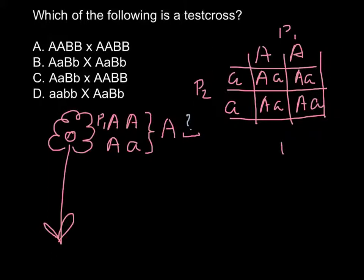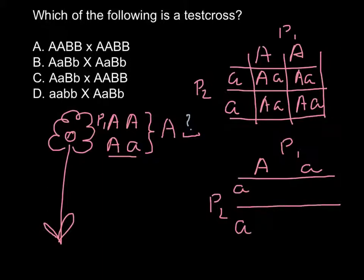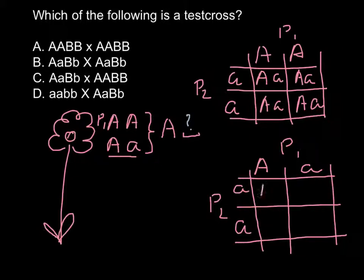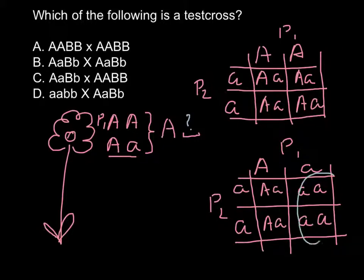If we use a heterozygous plant as parent one and cross it with a homozygous recessive, the outcomes would be different. This time we would have capital A small a, capital A small a, small a small a, and small a small a. So we get 50% small plants and 50% tall plants — a one-to-one ratio.